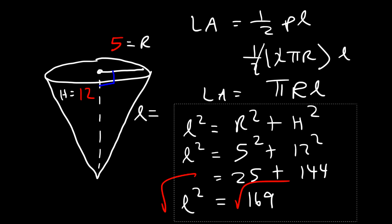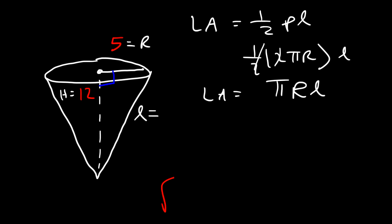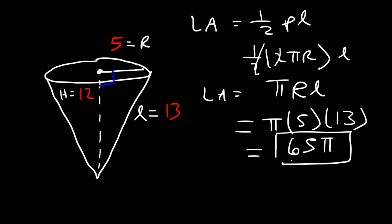The square root of 169 is 13, and so that's the slant height. So the lateral area is going to be π times R times L, so 5 times 13 is 65. So it's 65π square units. If this is in inches, the surface area is going to be square inches.